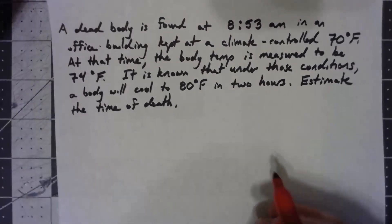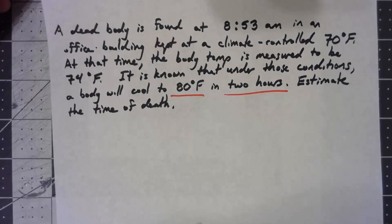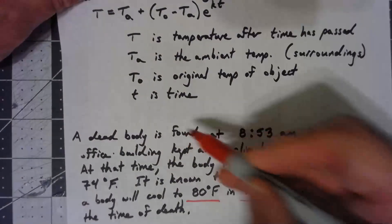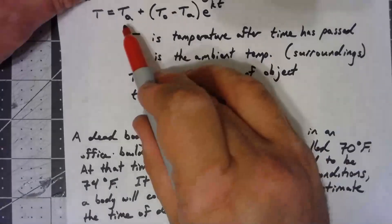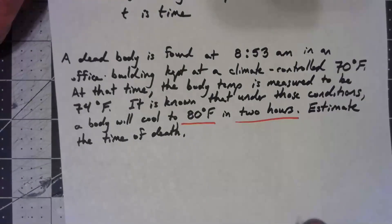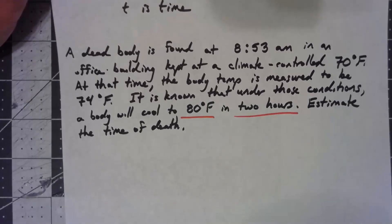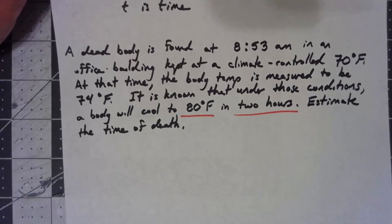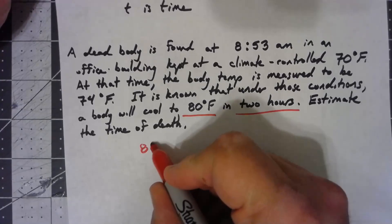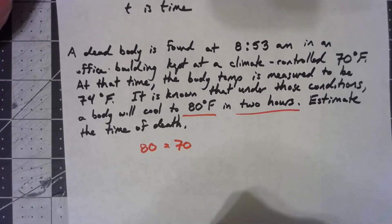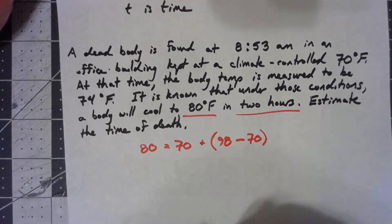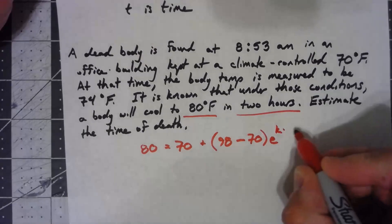So what do we know? We know the body cools to 80 degrees Fahrenheit in two hours. So I know the temperature T is 80 after some time. My time is 2, my ambient temperature is 70. What's the starting temperature? Typically this would be given to you in a problem, but hopefully you know that a human body temperature is right around 98 Fahrenheit. So 80 equals the ambient temperature of 70 plus the starting temperature of 98 minus 70, e to the K times two hours.